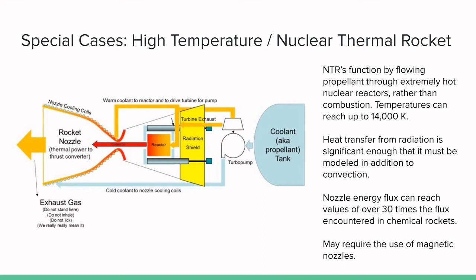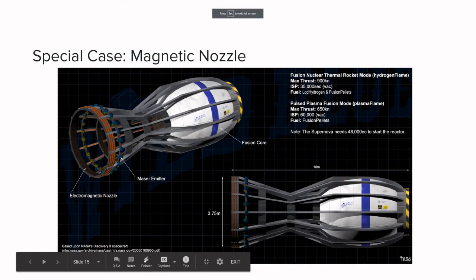the heat flux experienced by the nozzle is 30 times that of a traditional chemical rocket. But as you'll see in the next slide, regenerative cooling is not the only way to contain extreme amounts of heat. For our final and last case, magnetic nozzles.